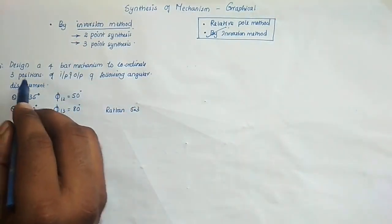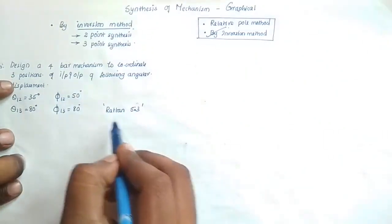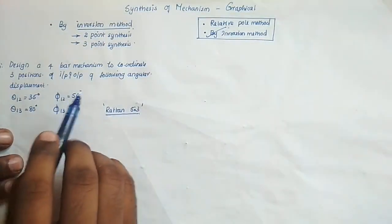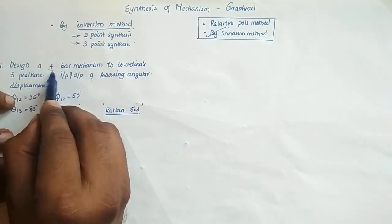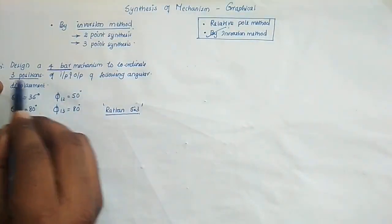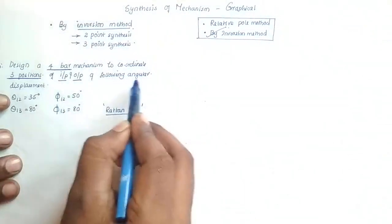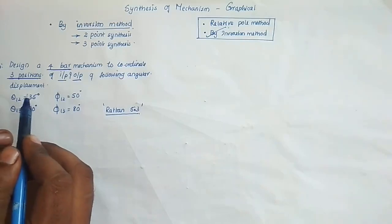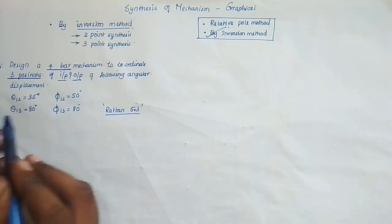We are discussing a question taken from exercise number 5.3. In this question, we need to design a four bar mechanism to coordinate three positions — that means three positions of the input and output link for the following angular displacements. Three points are given and we need to design the four bar mechanism accordingly.